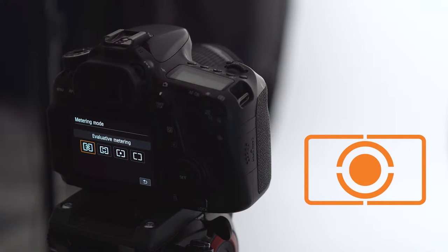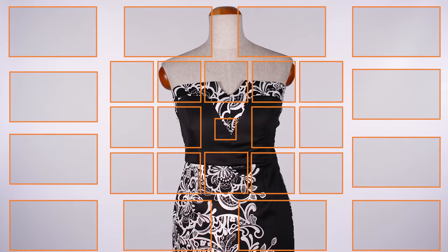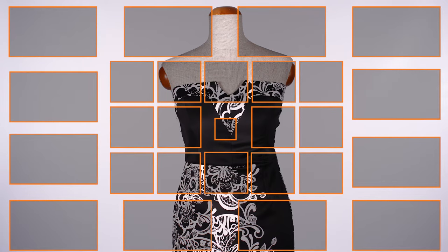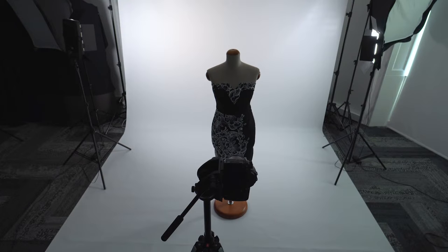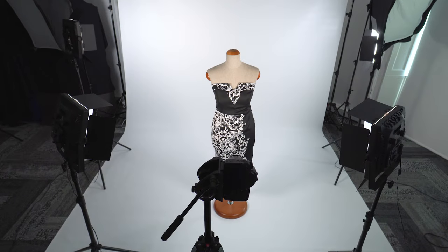Evaluative metering is the default metering mode for most cameras. It can also be referred to by other names, for example matrix metering or zone metering. Evaluative metering divides the sensor into multiple areas or zones. The meter reads light across all of these zones and produces an averaged light meter reading. Evaluative metering is best used when the light is even throughout the scene and doesn't contain overly bright or dark areas.